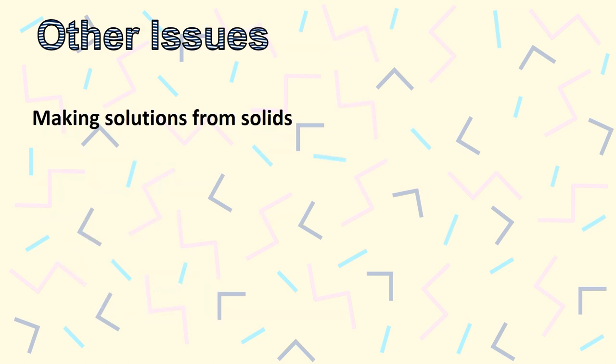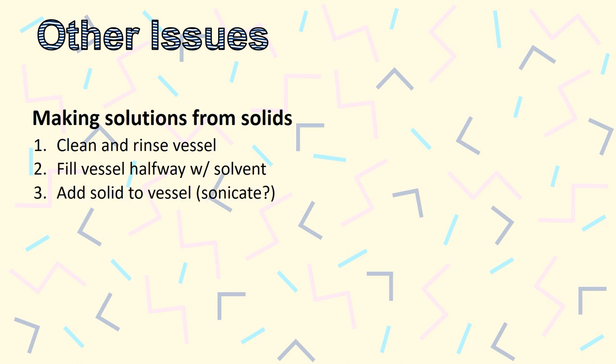Let's make sure you know how to make solutions. Here's how analytical chemists make solutions. First, you'll start with a clean vessel. Second, you fill the vessel halfway with the solvent you'll be using. Then, add the solid.